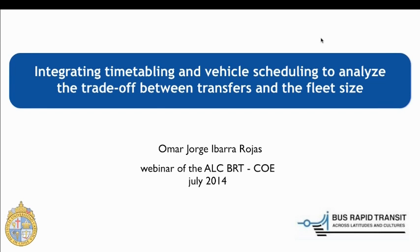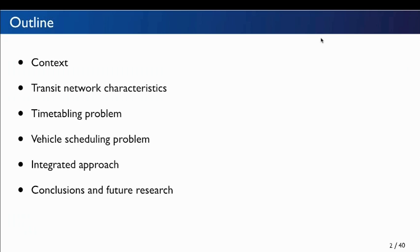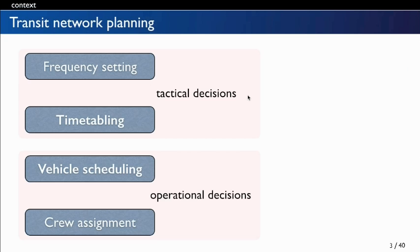Let's start with the outline of this presentation. The first point is the context of our study, which is the planning process of a transport system. In particular, the transit network planning problem spans decisions at the strategical, tactical, and operational levels.